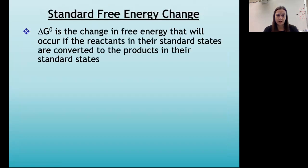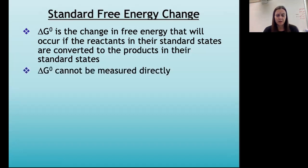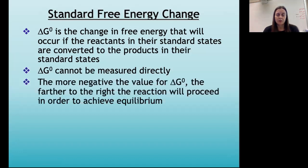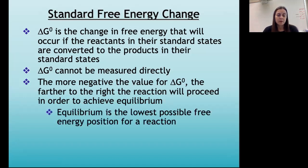Standard free energy change: delta G is the change in free energy that occurs if the reactants in their standard states are converted to products in their standard states. Those standard states are one molar concentrations for solutions, everything else in its pure elemental form, one atmosphere of pressure, and 298 Kelvin. This standard free energy change cannot be measured directly but can be determined by difference. The more negative the value for delta G standard, the farther to the right the reaction will proceed to achieve equilibrium. Equilibrium is always the lowest possible free energy position, and we'll come back to that when we talk about the relationship between delta G and K.